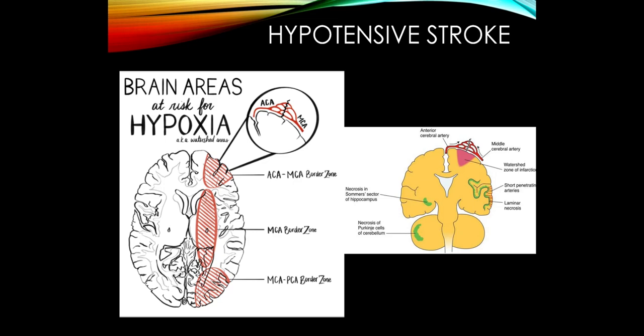With a global hypotensive event — for example, a cardiac arrest requiring prolonged CPR — certain areas of the brain are particularly susceptible to ischemia. Dr. Deish mentioned Sommer's sector in the hippocampus and the Purkinje cells in the cerebellum. But very importantly, it's the watershed areas of the brain that often produce the distinctive syndrome from a hypotensive stroke.